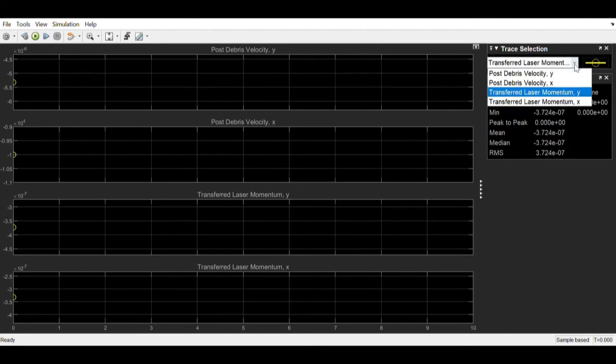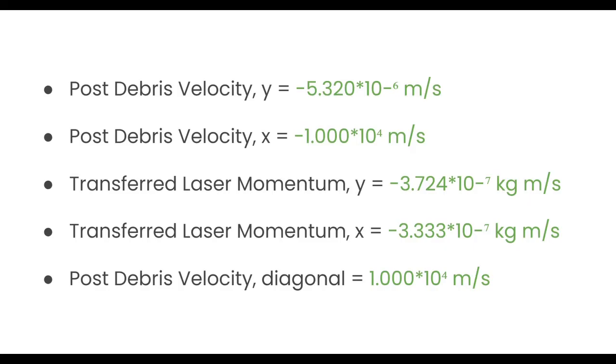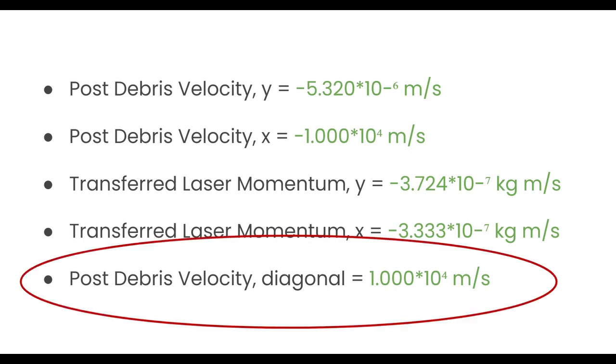Make sure you do this with both of the scope blocks. So after putting in the parameters for this model, we get these numbers. Most of them are basically negligible since they're so small, except for the post debris velocity in the diagonal direction, which is about 10,000 meters per second.